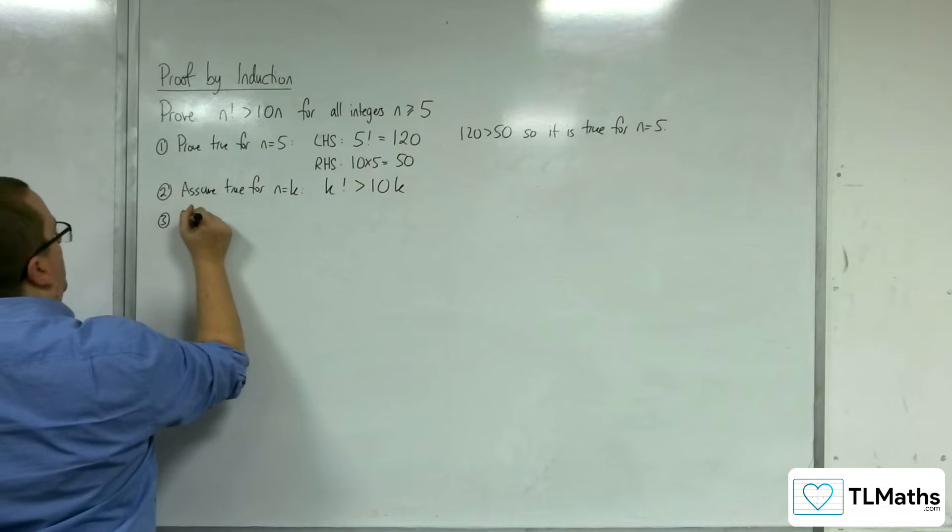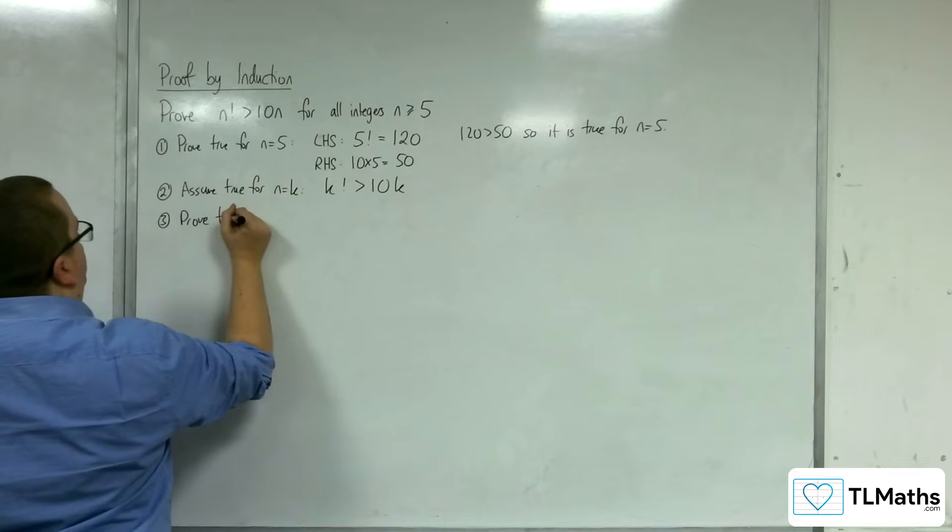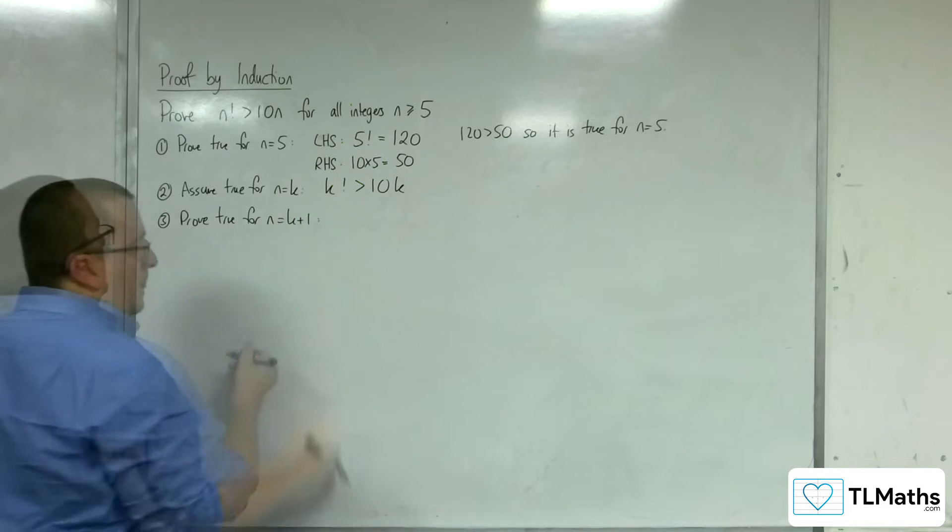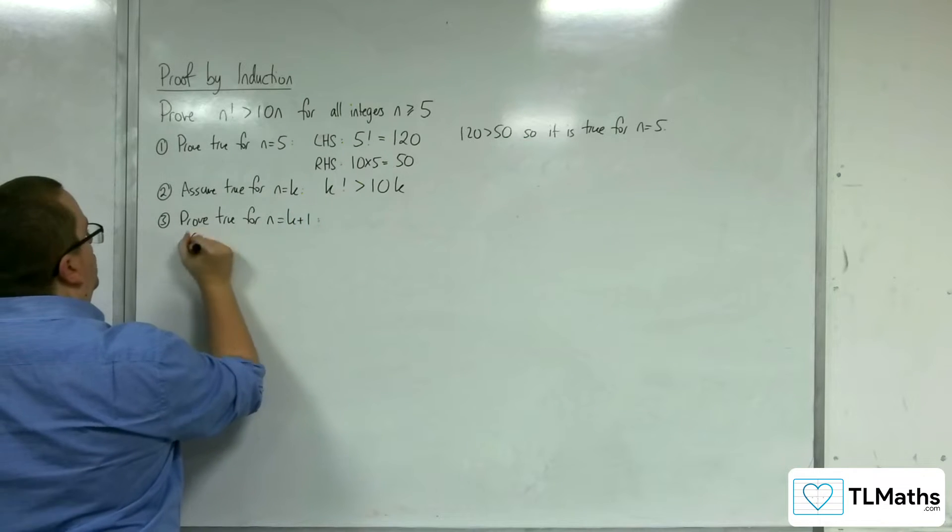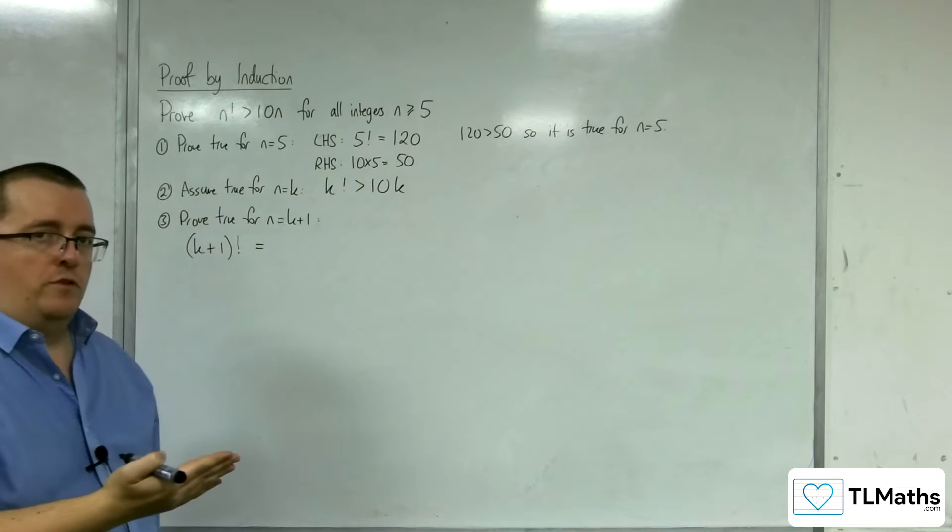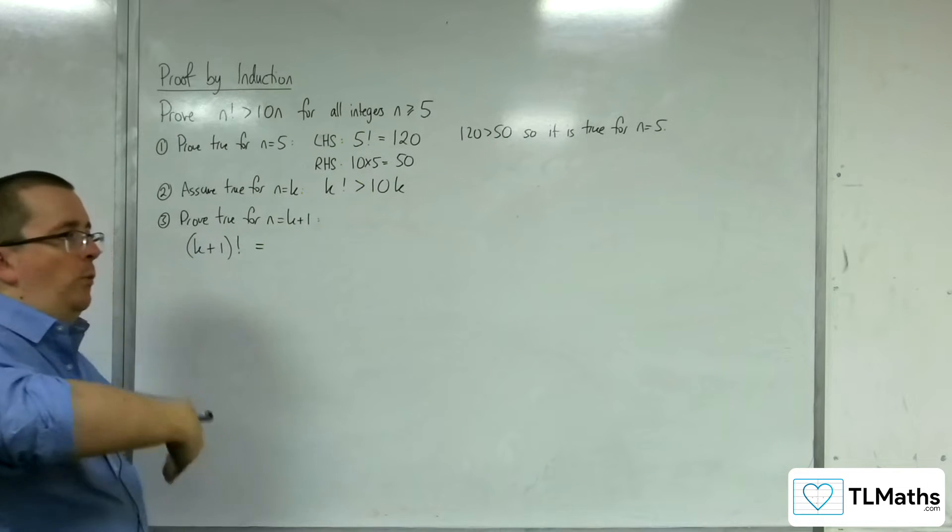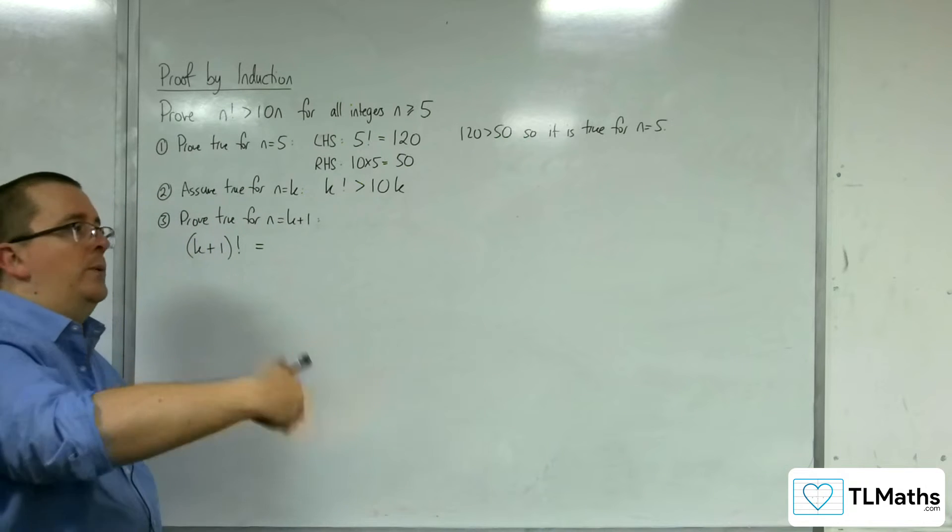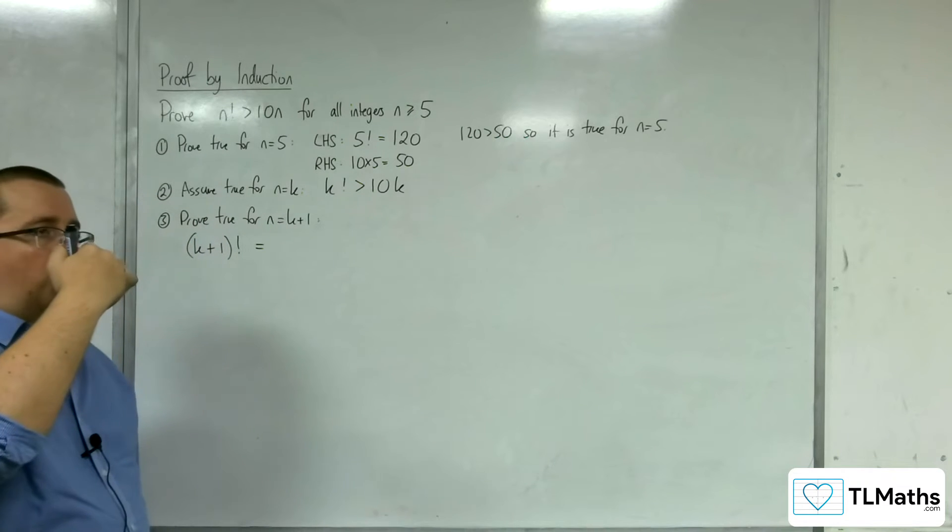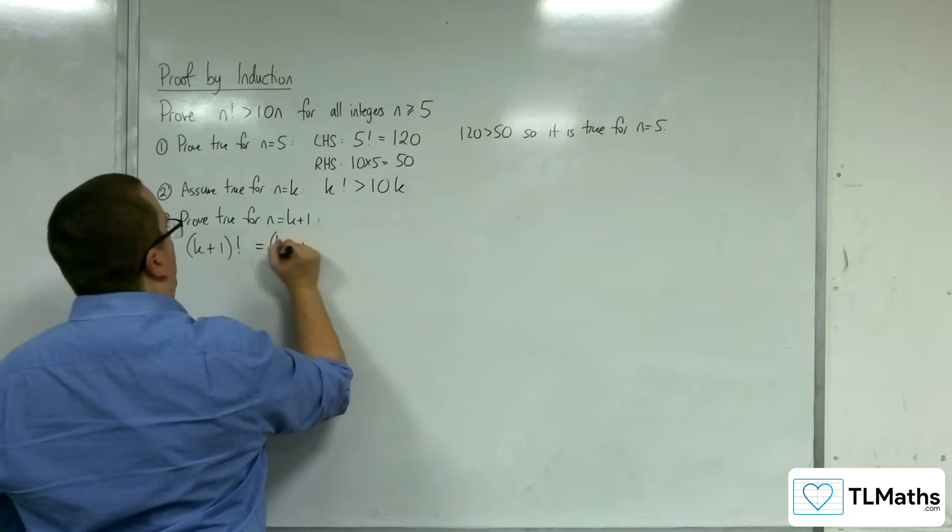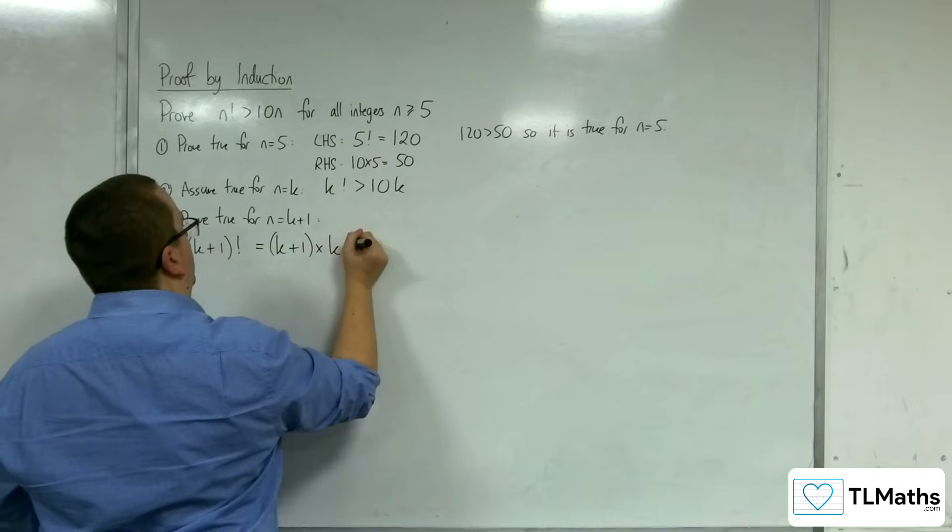Step 3, prove true for n equals k plus 1. So, k plus 1 factorial. Now, k plus 1 factorial is k plus 1 times k, times k minus 1, times k minus 2, etc. So, actually, this is the same as k plus 1 times k factorial.